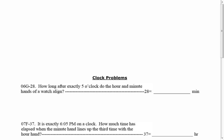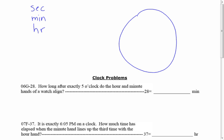You're going to have the second hand, the minute hand, and the hour hand that could be involved. When you go to draw your clocks, I have found the easiest approach is to get the corners first — so you have 12, 6, 3, and 9 — and then it's easy to just go in and fill in the ones that are missing.